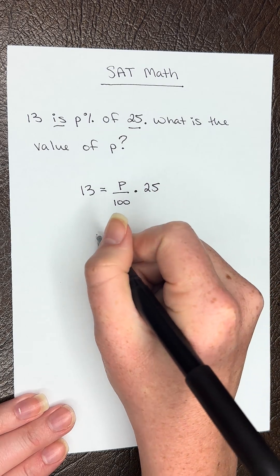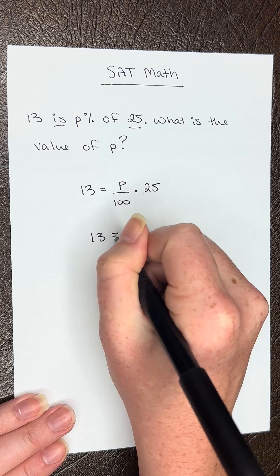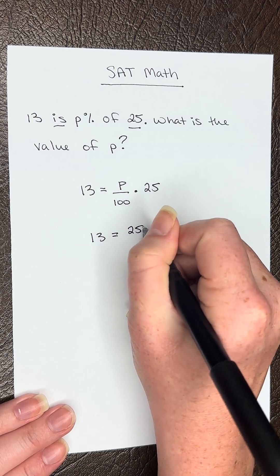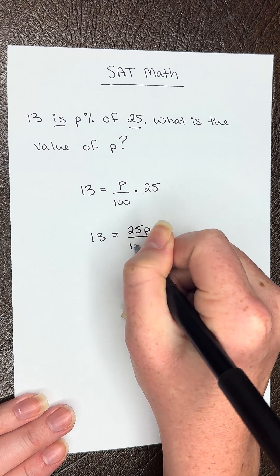Now let's simplify this. So we have 13 equals 25P over 100.